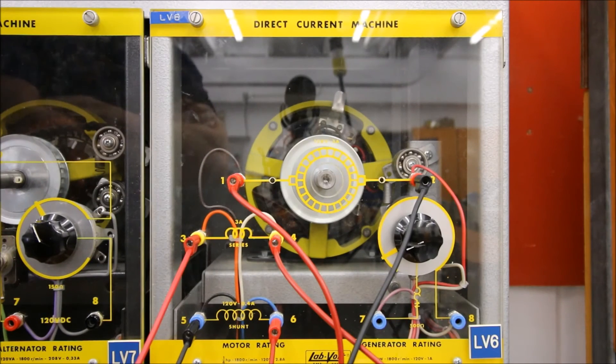Thank god that's not my motor. So a differential connection means that both of those magnetic fields are going in the opposite direction. In the cage match between the series and the shunt, which one do you think is going to win?